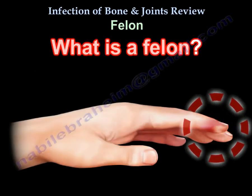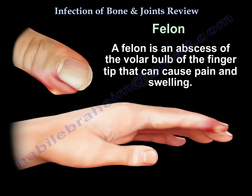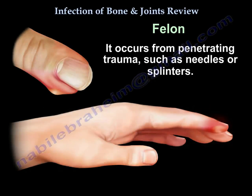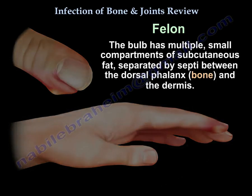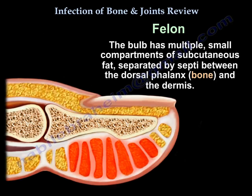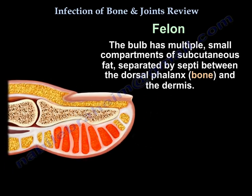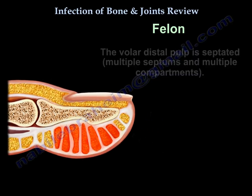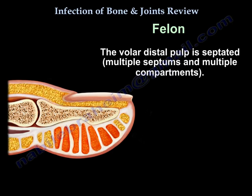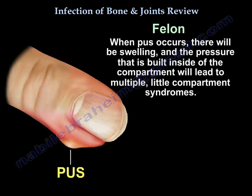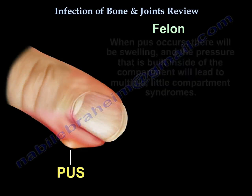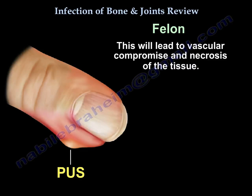A felon is an abscess of the volar bulb of the fingertip, causing pain and swelling. It occurs from penetrating trauma such as needles or splinters. The volar distal pulp is septated — multiple compartments of subcutaneous fat are separated by septa between the dorsal pharynx, bone, and dermis. When pus accumulates, the pressure builds inside these compartments and leads to multiple little compartment syndromes.